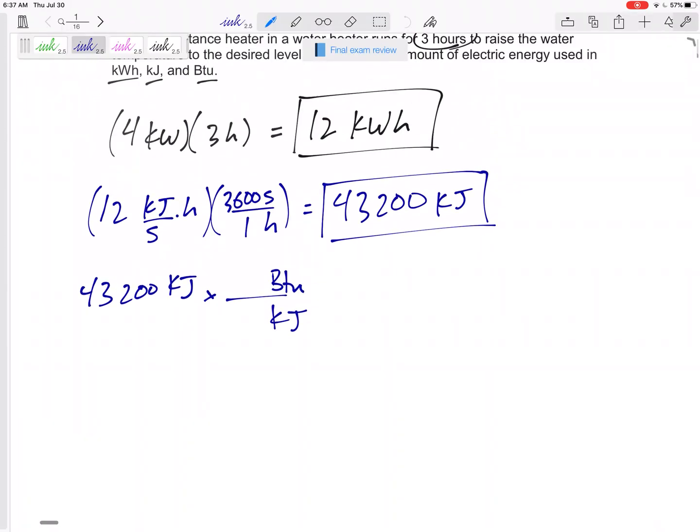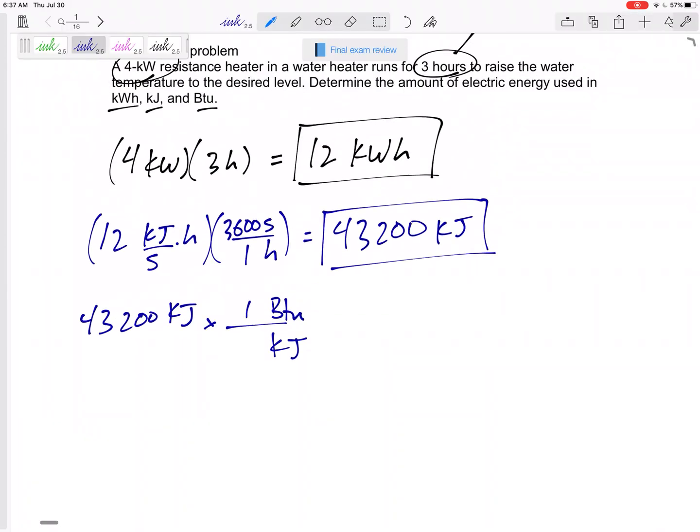All right. So let's go back to final exam review. Let's see. I've got one BTU, 1.055 kilojoules, 40,948 BTU.